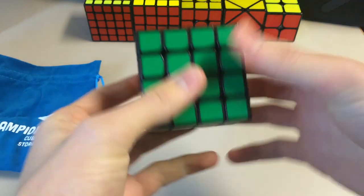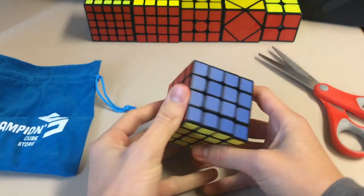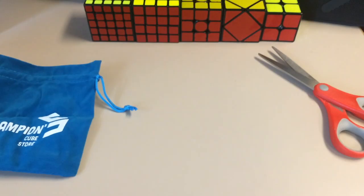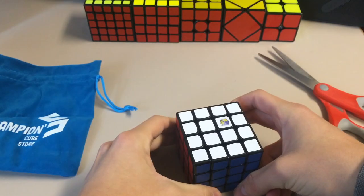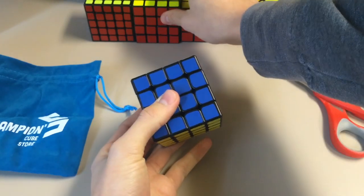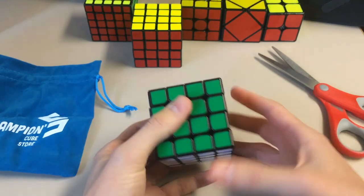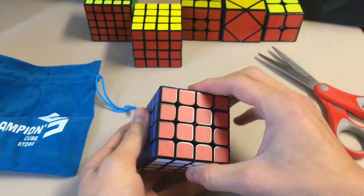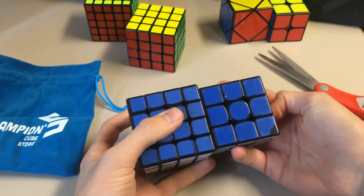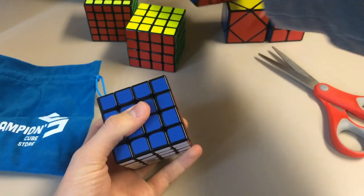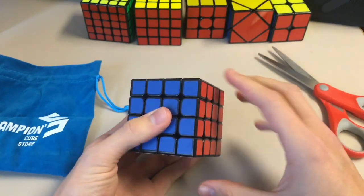Alright, so the stickers, they feel a bit textured, but not quite. They don't feel like these stickers do on this 4x4. But anyways, here are the shades. I guess they're just standard shades. The blue I think is a bit darker than the standard blue. Anyways, let's do first turns.